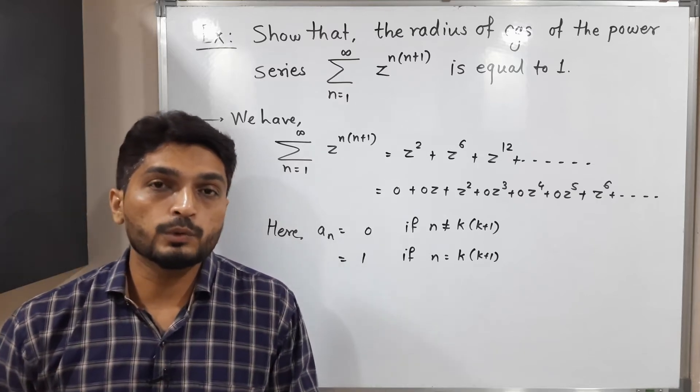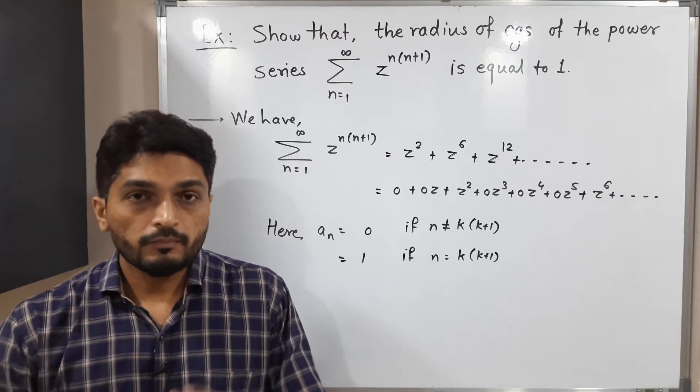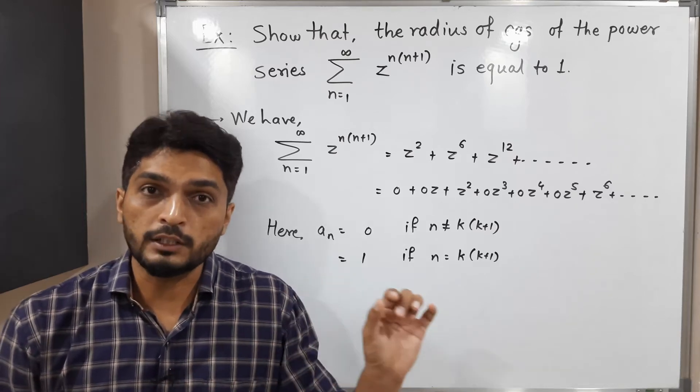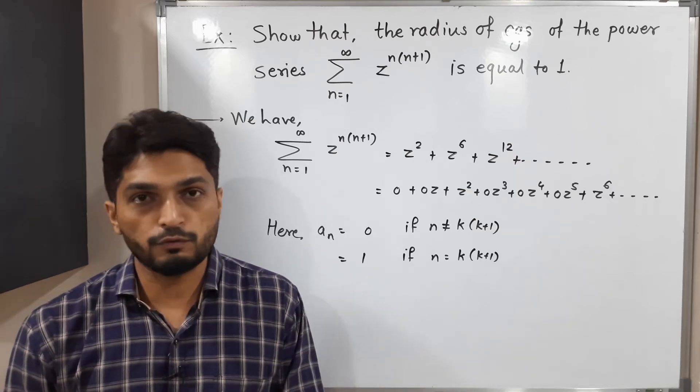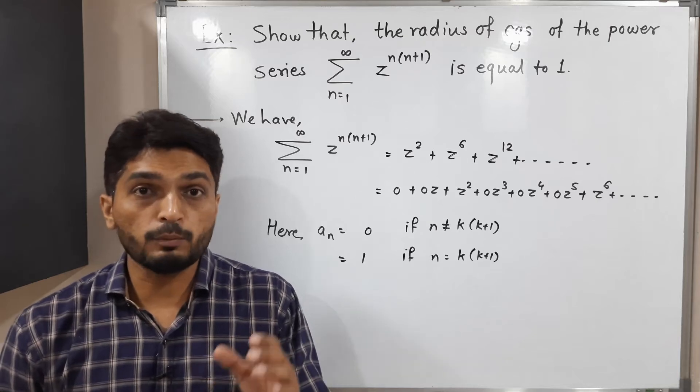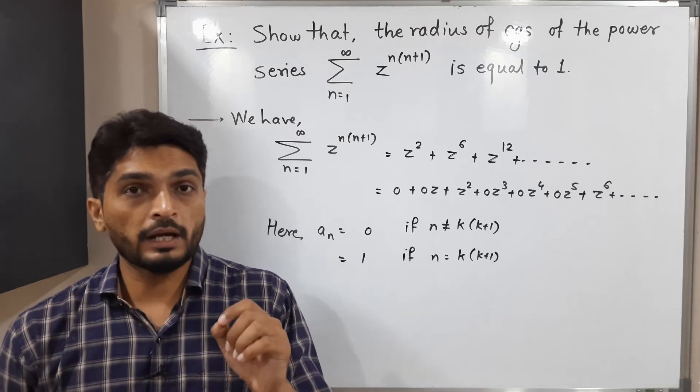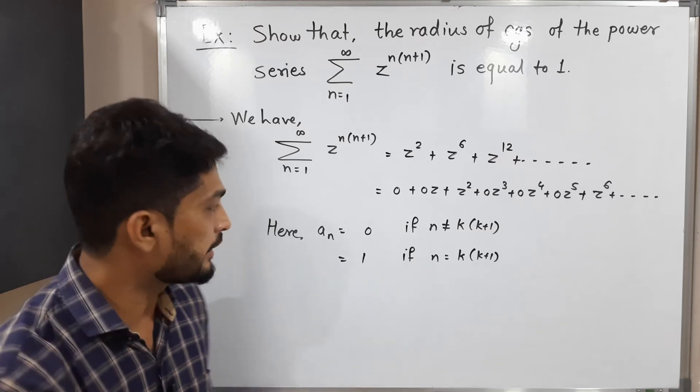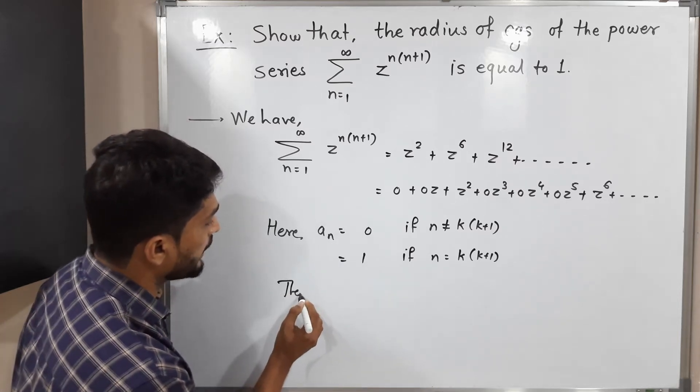Now the question is how to find radius of convergence. When you have this type of situation, I will suggest you to go with the definition of radius of convergence, which we get from Cauchy-Hadamard theorem: 1/R is equal to limit supremum of |a_n| raised to 1/n. So let us follow that definition. Let me write 1/R.